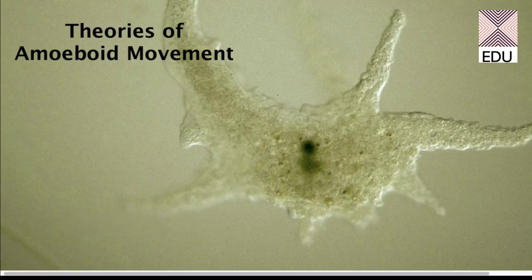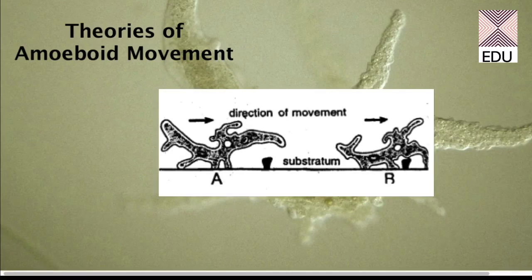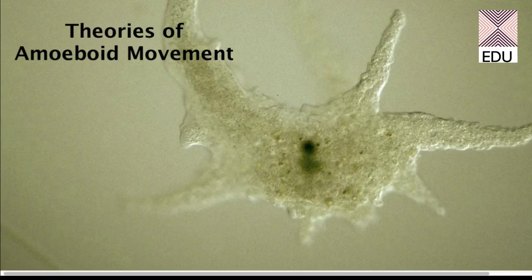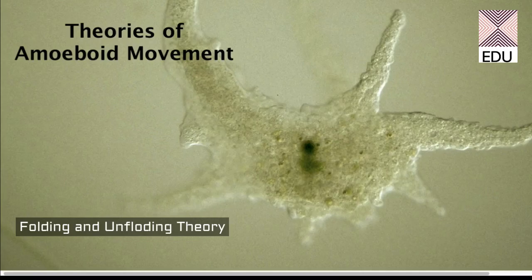The next theory is the walking movement theory, given by Dellinger in 1906. This theory explains amoeboid movement as amoeba walking on its pseudopodia. Amoeba makes two or three pseudopodia and walks on them, using the pseudopodia as its legs.